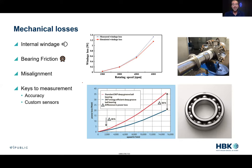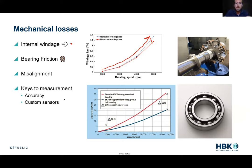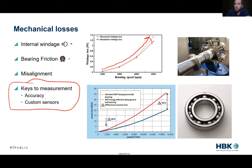Mechanical losses include internal windage — the air resistance of rotation — which follows an exponential curve with speed. You can characterize that curve at a no-load measurement and implement it via a custom sensor. Bearing friction also follows a speed-dependent curve: if you know the speed, you can get the bearing loss and implement a curve for it. Misalignment losses are trickier to characterize. The keys to measurement are an accurate speed measurement, accurate torque measurement, and the ability to implement custom sensors to look at individual loss components.